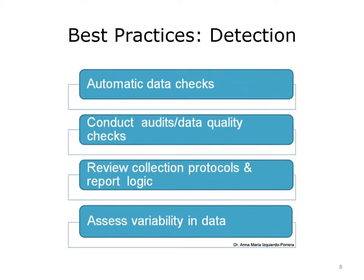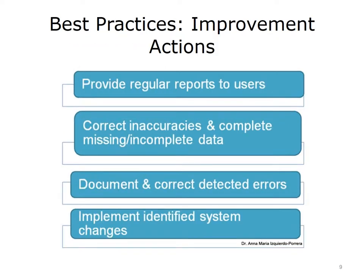Automatic domain or consistency checks, such as out-of-range data or inconsistencies between two data fields at data entry, extraction, or transfer, can detect potential flaws or errors. Data errors such as incorrect patient location, which can be undetectable through programming checks, can still occur. Manual processes for auditing or data checking should be developed. Regular review of data collection protocols and report logic should be conducted to correct sources of ambiguity or lack of currency with other changes in data definitions or catalog updates. Review of priority data items, such as frequency analysis or cross-tabulations, can be conducted to detect flaws or unacceptable deviations in the data. Regular reports about data quality should be made available to users.